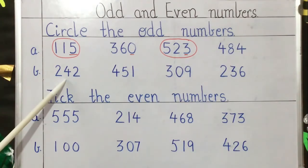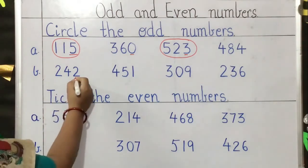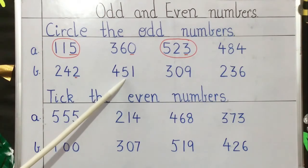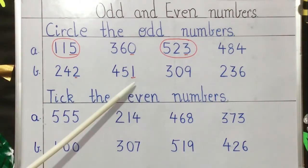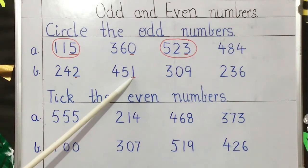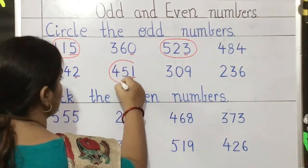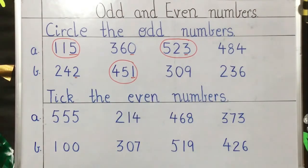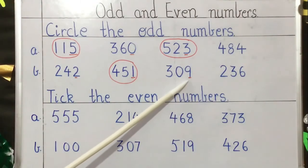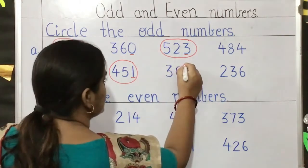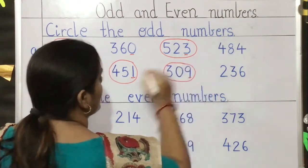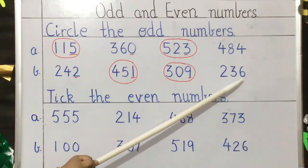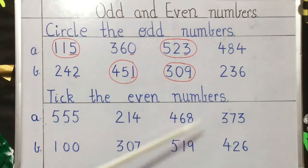The first number is 242. The last digit is 2, which is an even number, so we will leave this. The next number is 451 — check the last digit, it is 1 — so we will circle 451 because this is an odd number. The next number is 309 — check the last digit, it is 9 — a number ending with 9 is an odd number, so we will circle this. The next number is 236 — the last digit is 6 which is an even number — so 236 will be an even number and we will leave it.